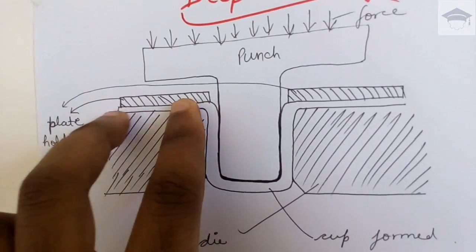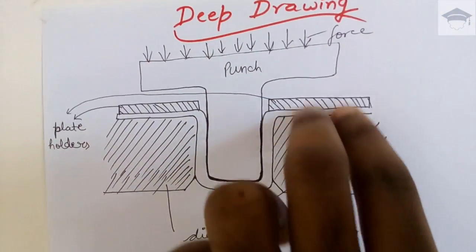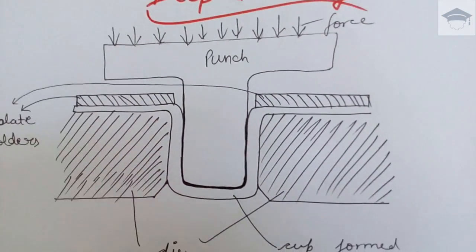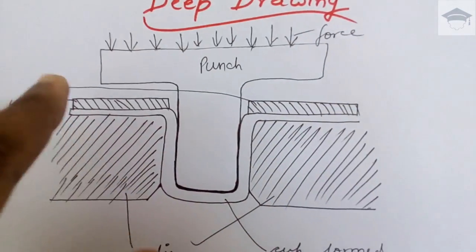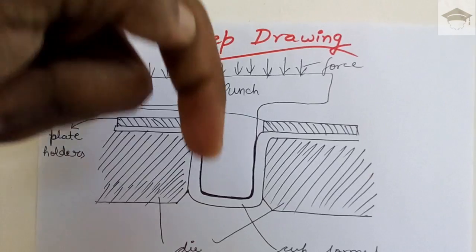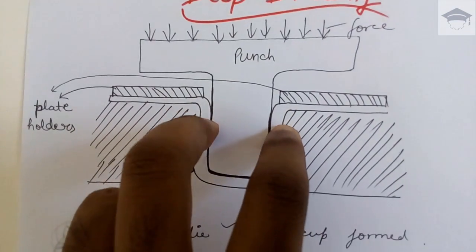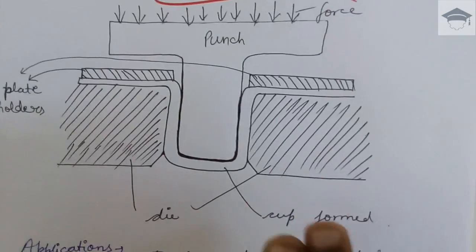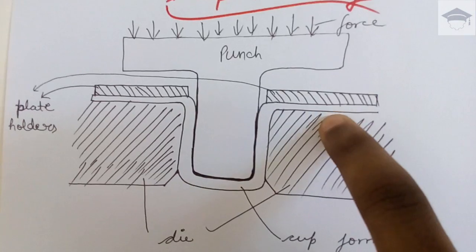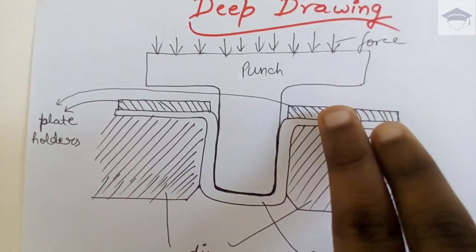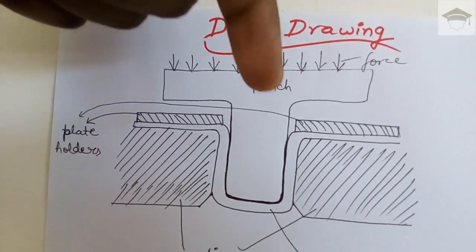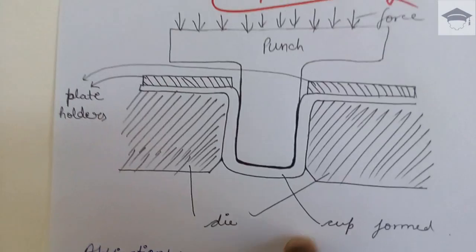And these extra portions, they are compressed by plate holders, that is, they provide clamping force. Because if here the plate is not clamped properly, then what will happen? When the punch will go through, then this sheet metal will fall. So in order to prevent that, here there are plate holders that prevent and they compress this portion and this portion so that only the punch drives through and the sheet is not pulled.